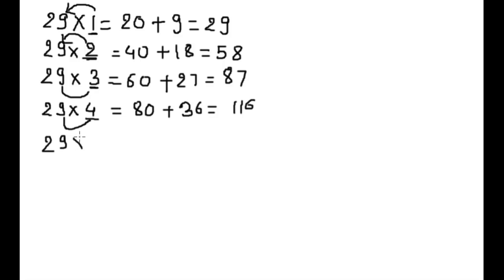29 into 5. Double of 5 is 10. Put 0 plus 9 into 5 is 45. 145.